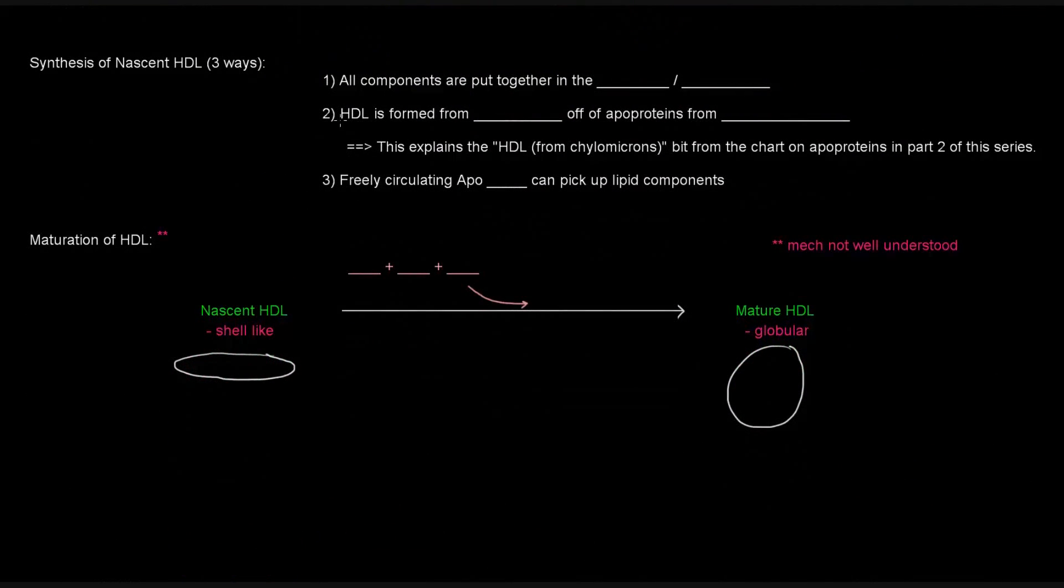So how is HDL made? There are three different ways where HDL can be made. One way is the one that we're kind of going to look at in the diagram below, where all the components are put together in the liver or in the intestine. We're going to think about it as far as the liver goes. Another way is that HDL can be formed from the budding off of apoproteins from chylomicrons, which kind of explains the parentheses from chylomicrons portion in the chart on the apoproteins in part two of the series. So I encourage you to check that out if you haven't already. Another thing is that freely circulating APOA1s can just pick up lipid components and form an HDL lipoprotein.